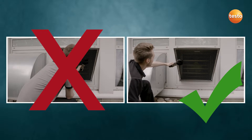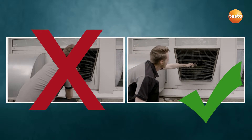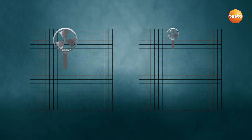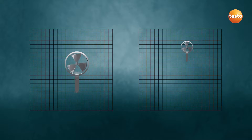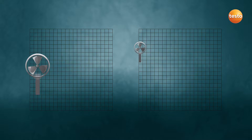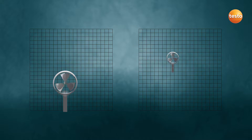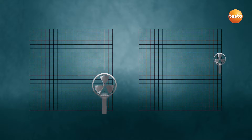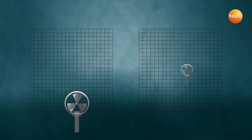The best method is to move the vane across the grill surface at a distance of 5 cm. Vanes with 100 mm diameter are better suited to measuring than instruments with smaller vanes, as the flow values are integrated and averaged over a larger area. Integrating the same area with a smaller vane takes significantly longer.